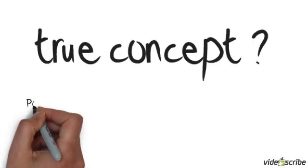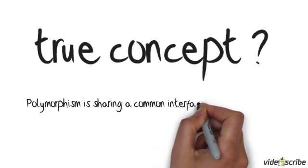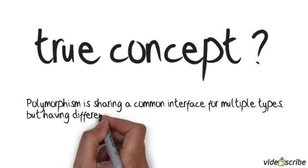Let's start with the basic definition. Polymorphism is sharing a common interface for multiple types but having different implementations for different types.